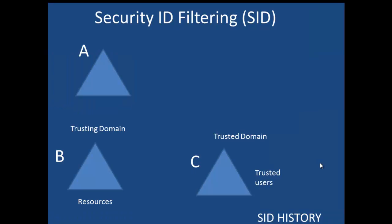We now turn our attention to security ID filtering. Security ID filtering is a security measure set on all trusts to prevent malicious users who have domain or enterprise administrator level access in a trusted forest from granting elevated user rights to a trusting forest. In order to understand security ID filtering, we first have to understand security ID history.